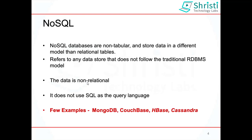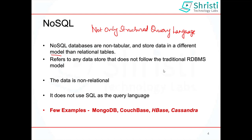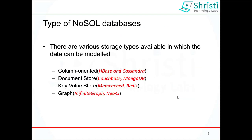To start with, let us understand what is NoSQL. NoSQL means 'not only structured query language.' NoSQL databases don't store data in the form of tables like RDBMS. They use different models for storing data. The data can be stored in the form of documents, columns, key-value pairs, or graphs. Based on the storage type, NoSQL databases are categorized as column-oriented, document-oriented, key-value store, and graph databases.